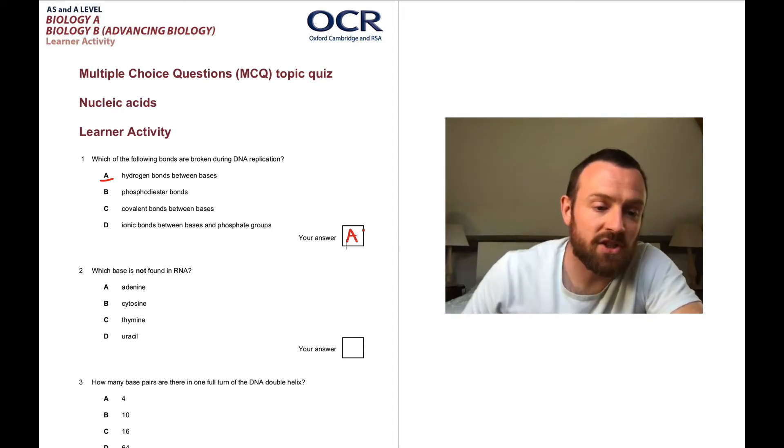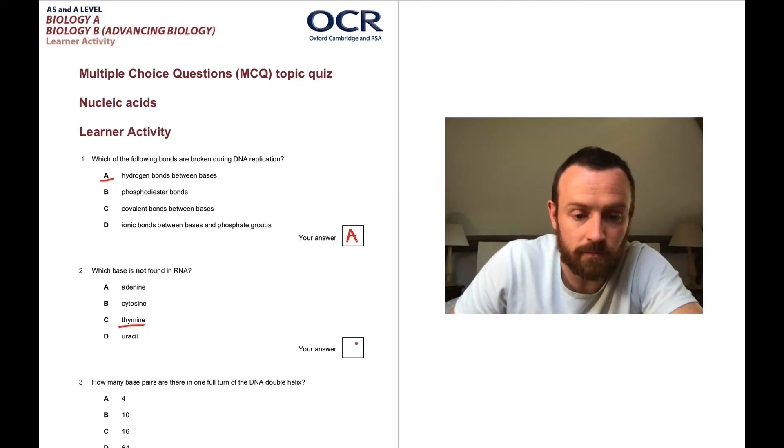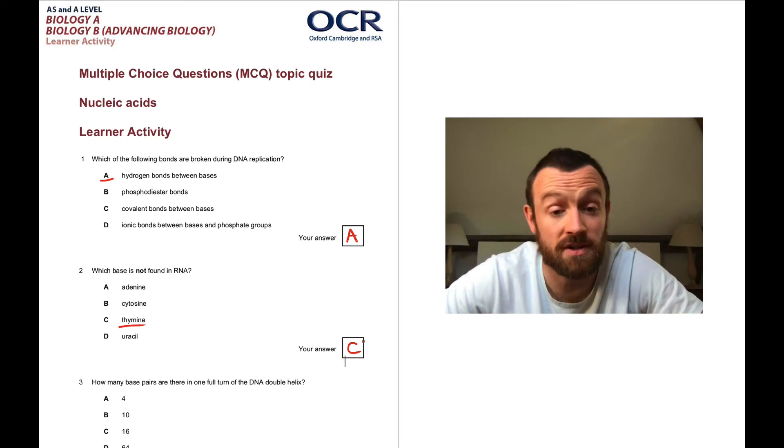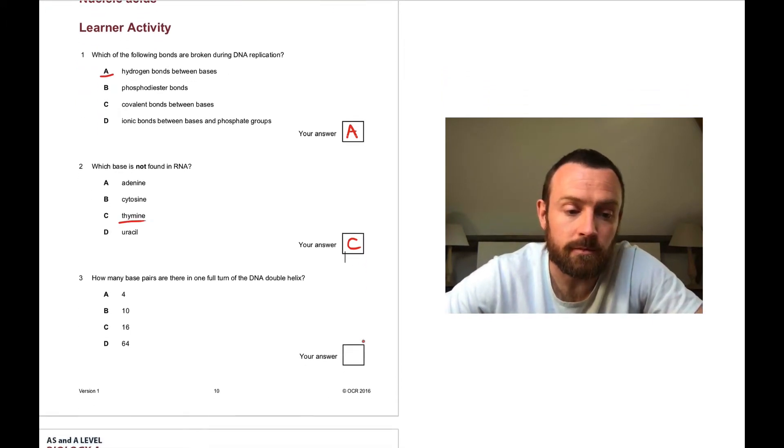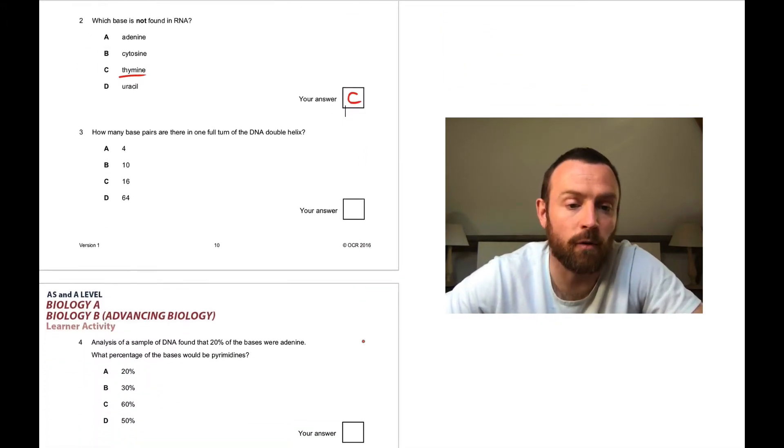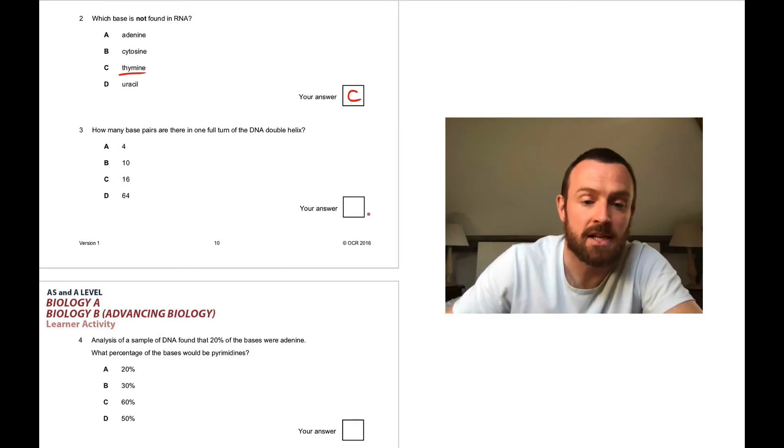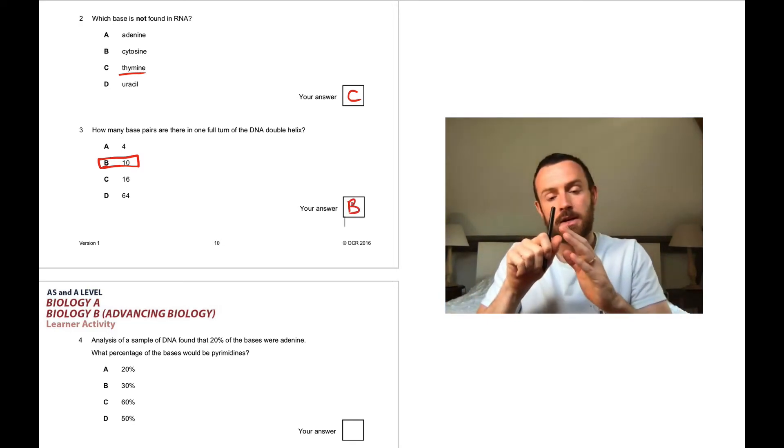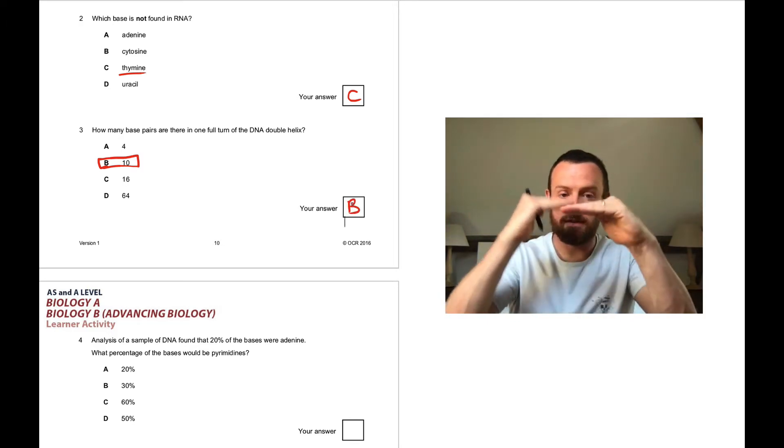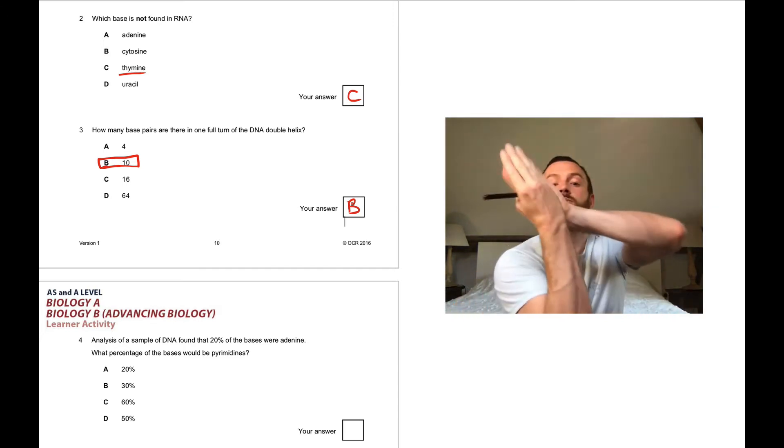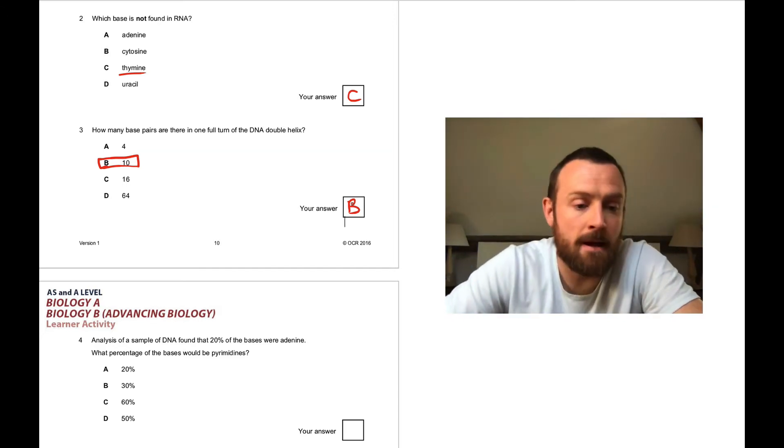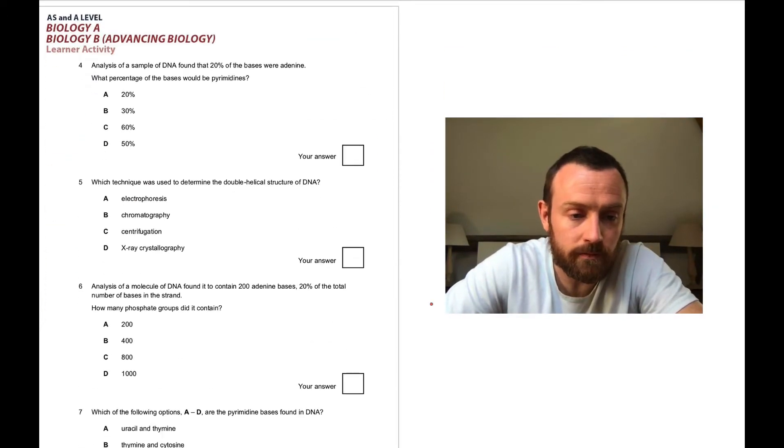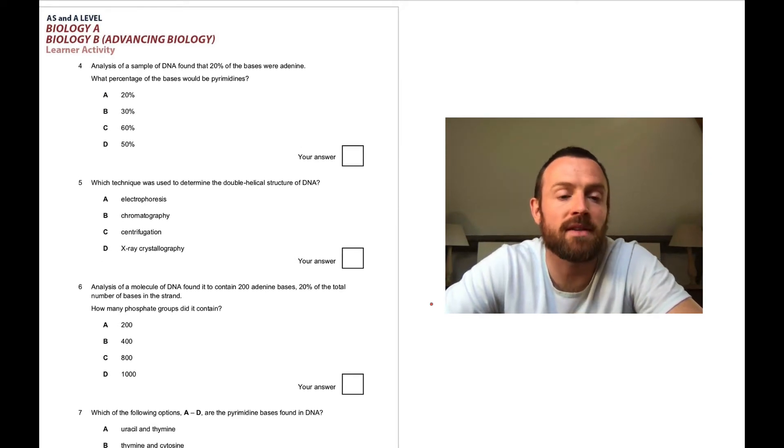Which base is not found in RNA? That is thymine, it's C, because thymine is replaced with uracil in RNA. How many base pairs are in one full turn of the DNA double helix? This is 10. I think I forgot to talk about this in the mind map, so add that - it takes 10 rungs of the ladder before the helix twists fully.